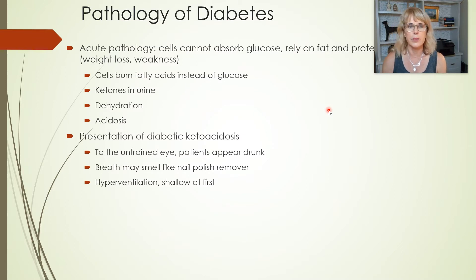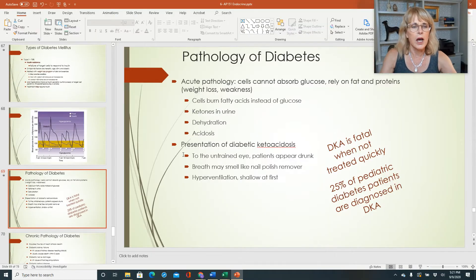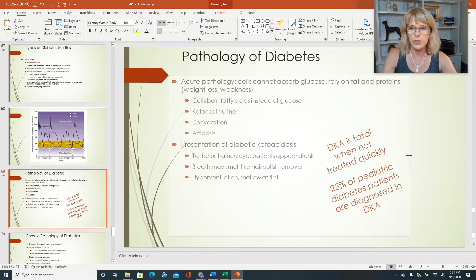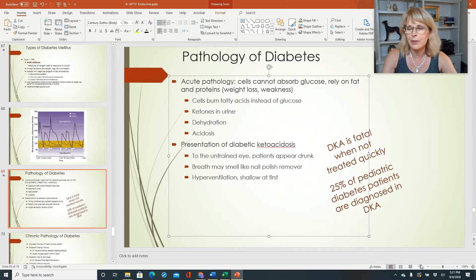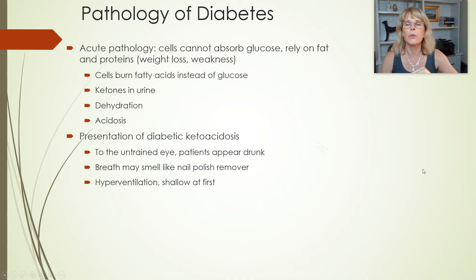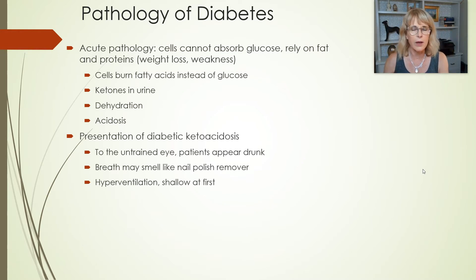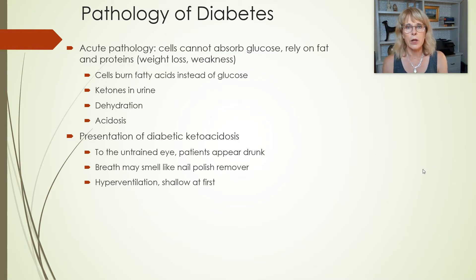So the pathology of diabetes. Let's talk about the acute signs. Acute signs are signs that are sudden and often intense. Whenever a doctor or nurse describes acute signs, they mean it came on pretty suddenly — not necessarily over the course of a minute, but over the course of weeks. Whereas chronic diseases, that damage gets done generally over the course of years. So the acute pathology.